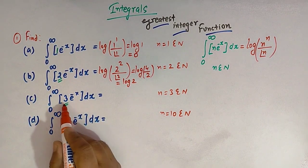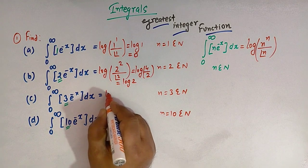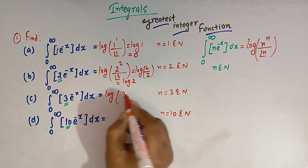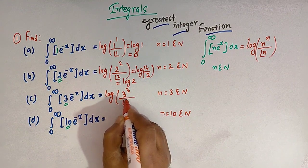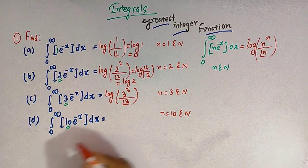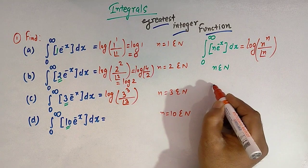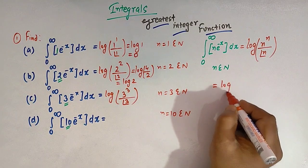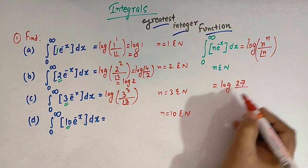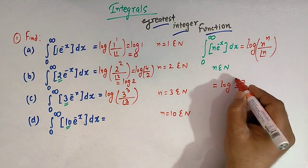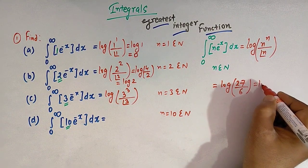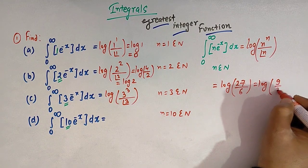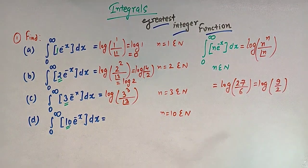In the third integral, n equals 3, so the value is log of 3 raised to 3 divided by factorial of 3. Here, 3 raised to 3 is 27 and factorial of 3 is 6, so this can be written as log of 27 over 6, which simplifies to log of 9 over 2.